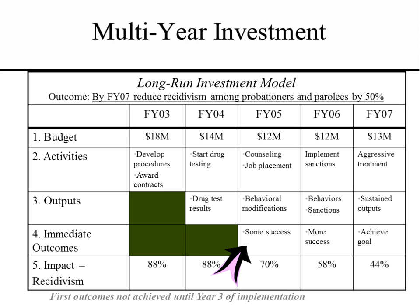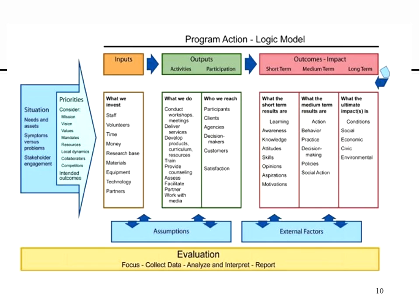We also used a diagram to suggest that for a new program we wouldn't receive any outputs until year two, and no significant outcomes or impact until year three and beyond. This is an example of a visual logic model showing inputs, activities, outputs, outcomes, and impact — also depicting the time phasing of when things will be realized. It uses color to show that there are no outcomes in the first year of the program, with outcomes starting to be realized in year three.